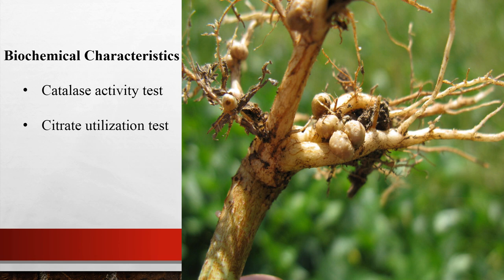For biochemical characterization, to confirm whether isolates are rhizobia, they are incubated in different media for each physicochemical test at 30°C depending on their growth rate. The catalase activity test examines the presence of the enzyme catalase by suspending one loopful of organism in a drop of 3% hydrogen peroxide on a glass slide — production of bubbles indicates a positive result. For the citrate utilization test, growth on a slant of Simmon's citrate agar is observed; a distinct color change from green to blue indicates a positive test.